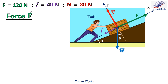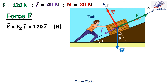Let's start with the applied force F. Since F is oriented along the positive x-axis, it has no component along the y-axis. Then F can be written as Fx i, where Fx is positive and equals 120 newtons. So the x component of F equals 120 newtons and the y component of F equals 0.